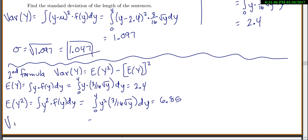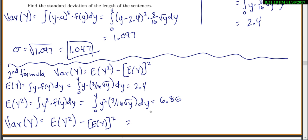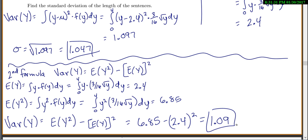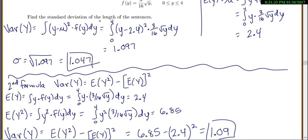So the variance of y equals the expected value of y squared minus the expected value of y, all squared — that's 6.85 minus 2.4 squared, which is 1.09. Depending on which formula you use, this second method wasn't too hard here since the integrals are manageable. Sometimes you get really hard integrals and this formula ends up being easier to compute.